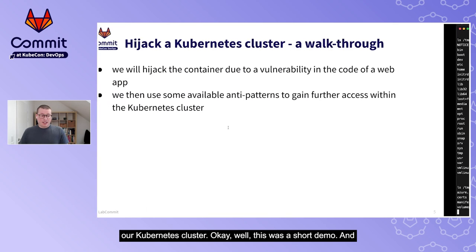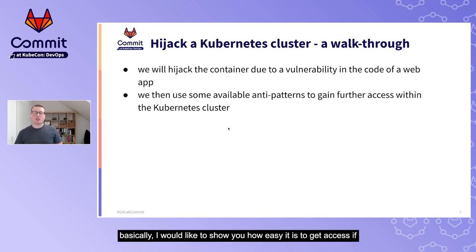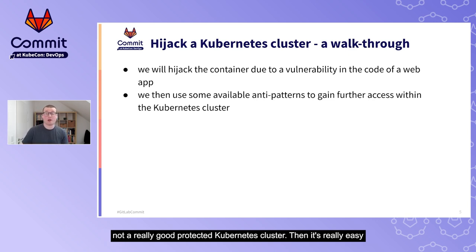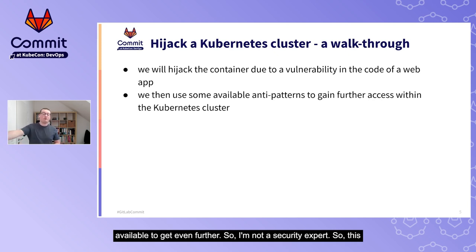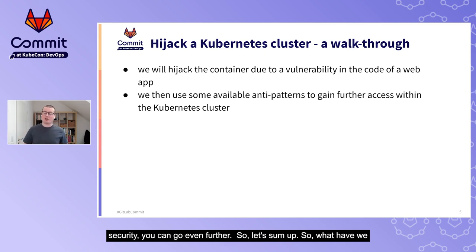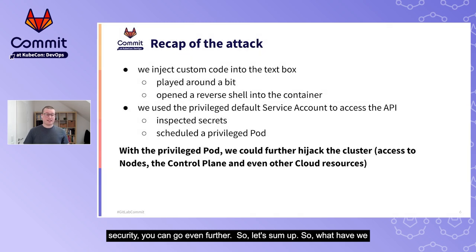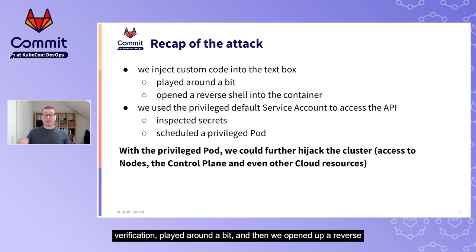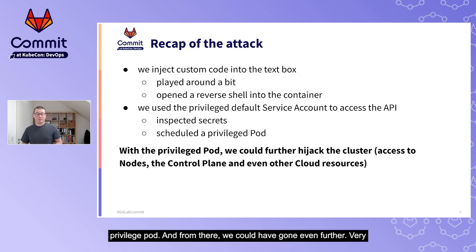That concludes the demo. The goal was to show how easy it is to escalate access when a web application has a security issue and the Kubernetes cluster is not well protected. To summarize: we injected custom code via the text box, opened a reverse shell into the container, then used a privileged default service account to inspect secrets and schedule a privileged pod.